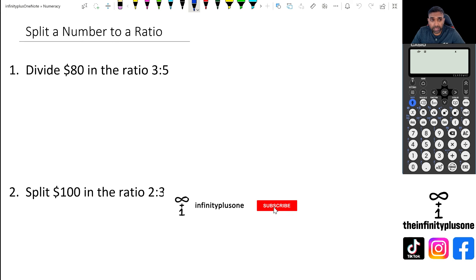Looking at question one here, what we've been asked to do is divide eighty dollars in the ratio of three to five. Now I'm going to show you folks a couple of methods of doing this, and of course from question two onwards I'm probably going to do the quicker method.